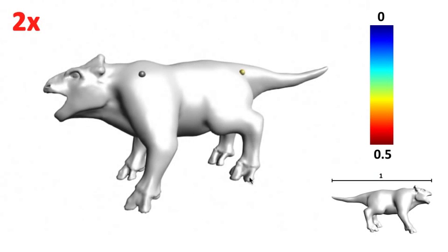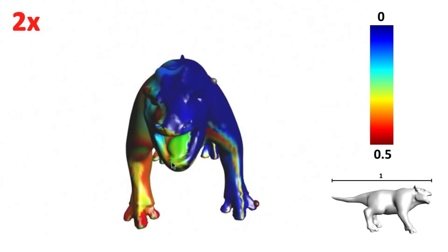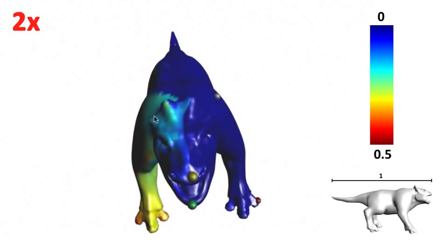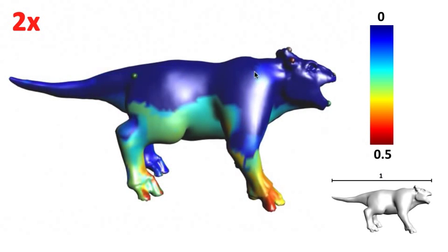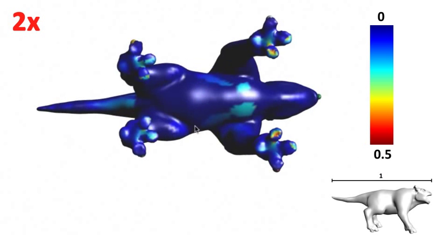To help the user position the anchors, we interactively solve the inverse and forward problem for every vertex, and we show with pseudo-colors the regions of the surface where mismatches occur. The user continues to add points until the entire surface is covered.